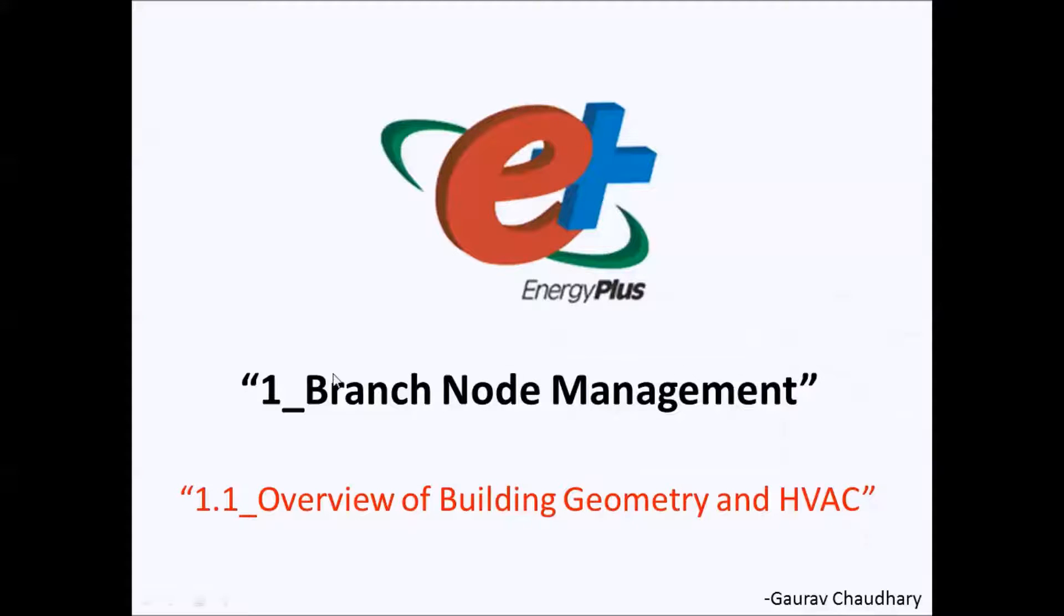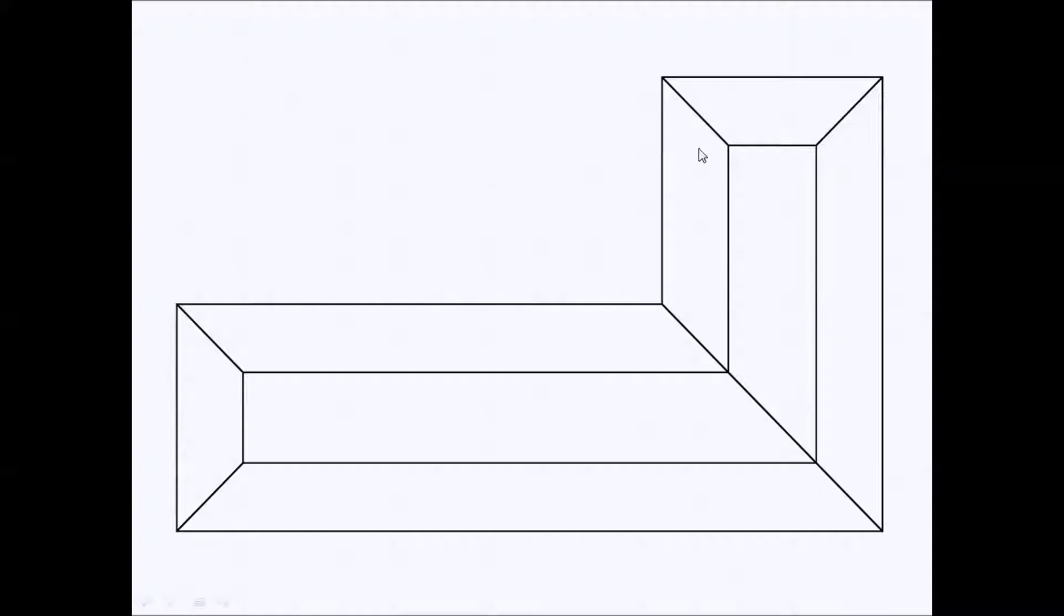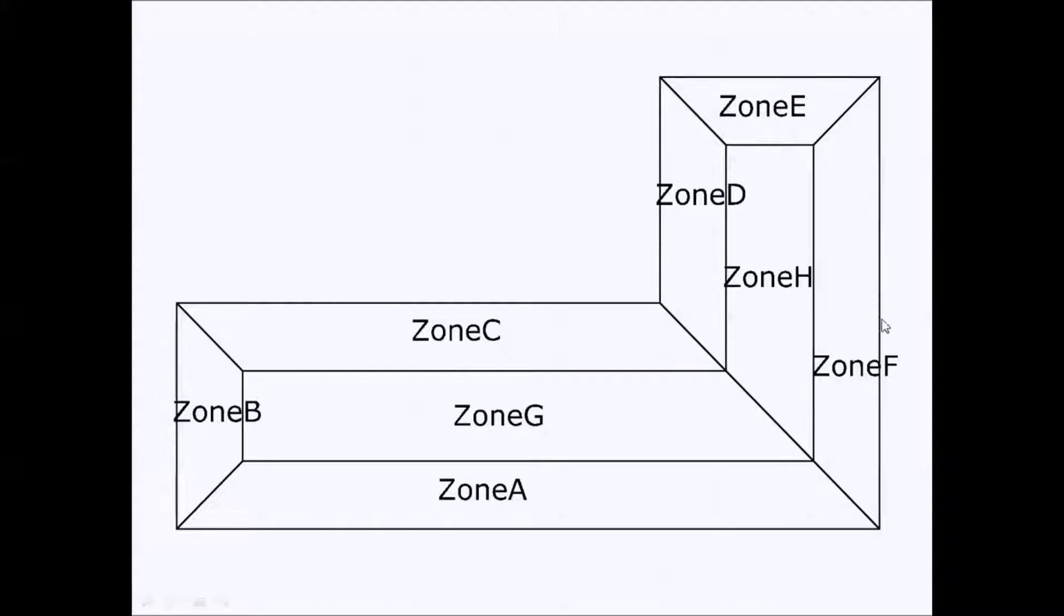Now coming to the building geometry, the eight zones which you saw are actually a part of this building. This is an L-shaped building. There are two core zones and six peripheral zones. So these A to H are actually like this - zone A, B, C, D, E, F, G, H.